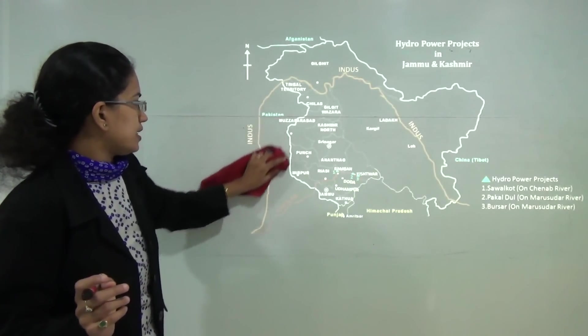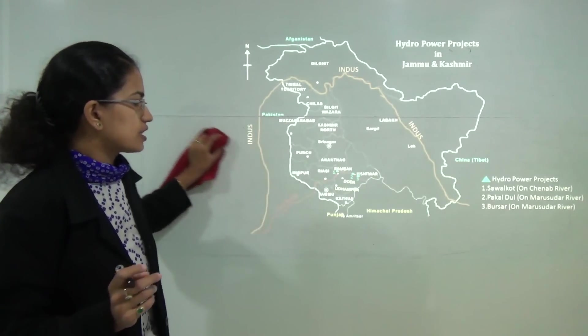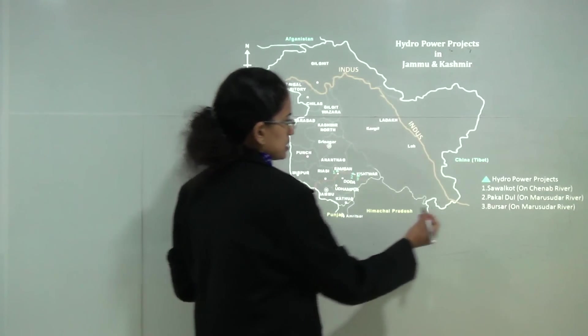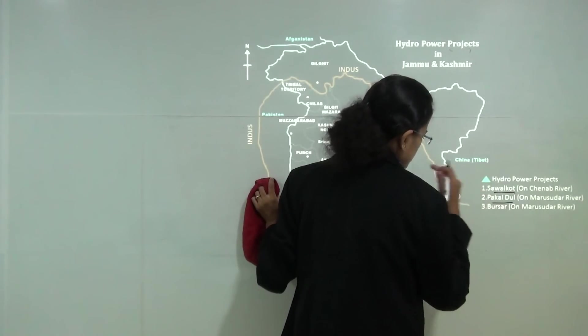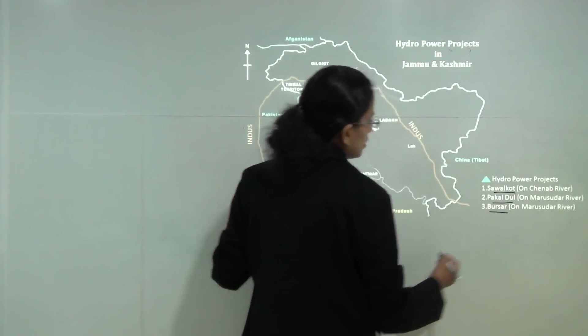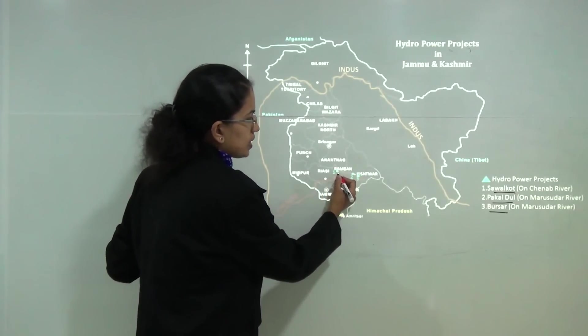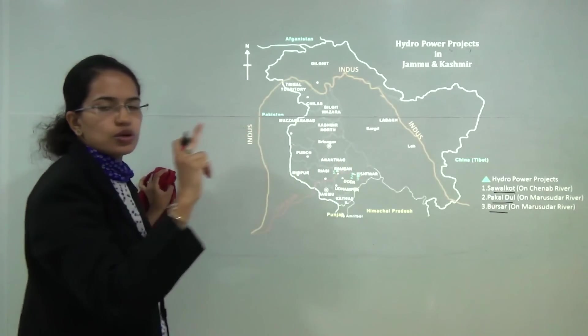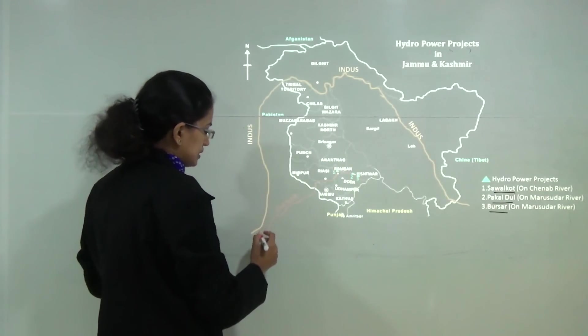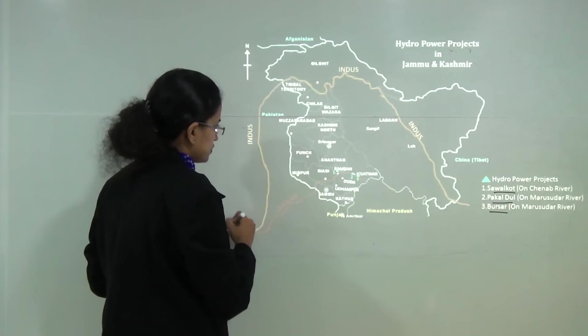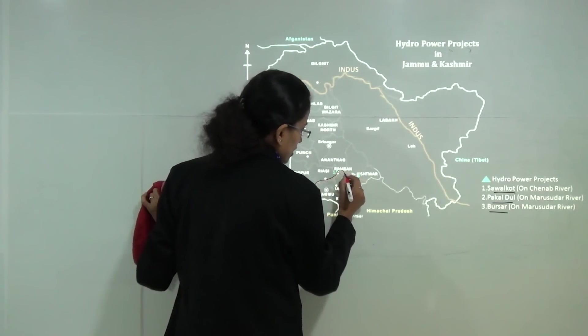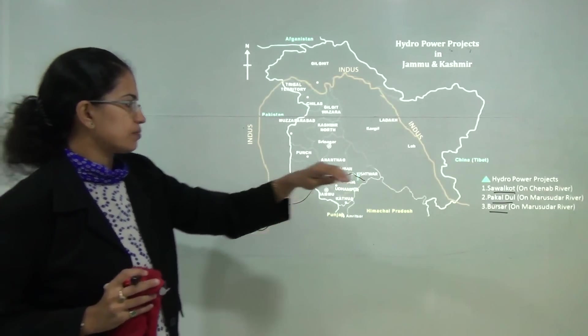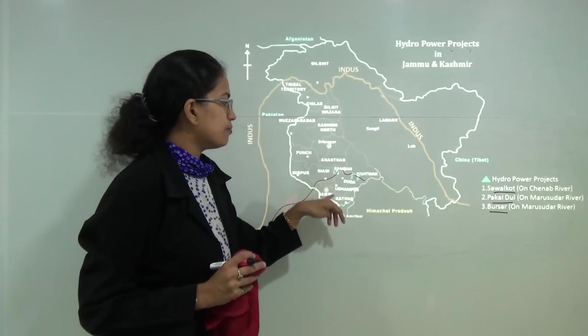The Indus water treaty. As per the Indus water treaty, there are three hydropower projects that are recently in news. The first is Sawalcoat, the Palakdul and the Bursar. Sawalcoat lies on the Chenab river. This is the main Indus river that flows through Jammu and Kashmir and parts of Pakistan. A tributary of Indus is Chenab and on the Chenab river you have the Sawalcoat hydroelectric power plant which lies in the Ramban area.